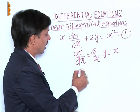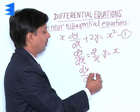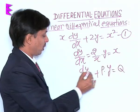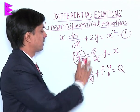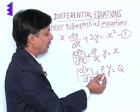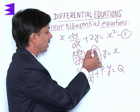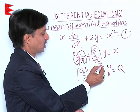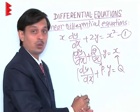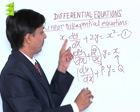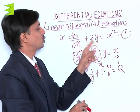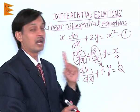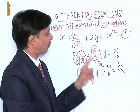Now we notice that the problem is of the shape dy/dx + Py = Q, comparing with the standard linear form. Then P is the coefficient of y, which is 2/x, and Q equals x. So it is very clear that x·(dy/dx) + 2y = x² is a linear differential equation where P and Q are functions of x — P = 2/x and Q = x.